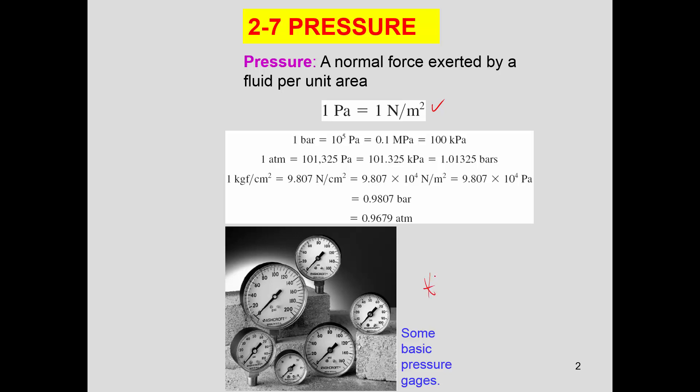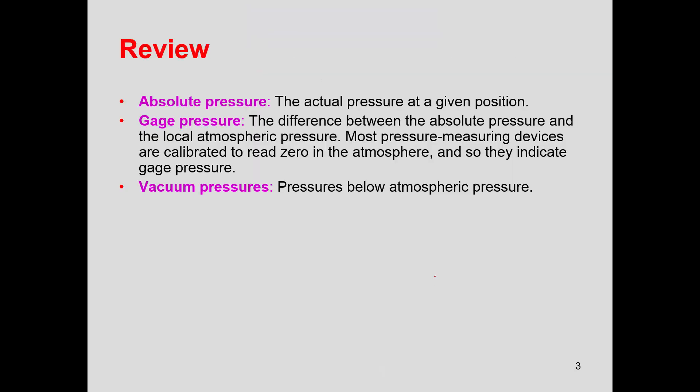Now, there's two things that are really important, and it's to understand the definition between absolute pressure and gauge pressure. And of course, the gauge pressure could also be a vacuum pressure. So the actual pressure is the actual pressure at a given position, whereas the gauge pressure is the difference between the absolute and the local atmospheric pressure.